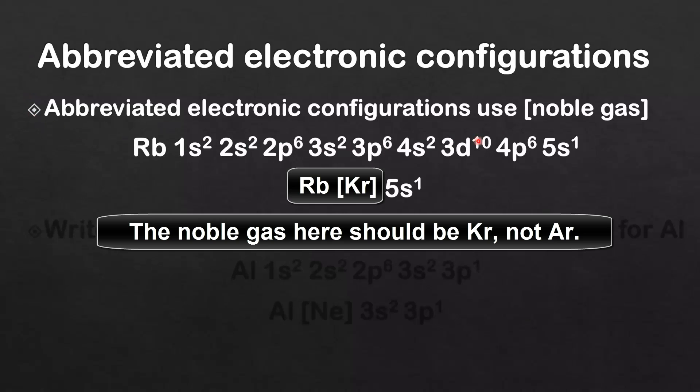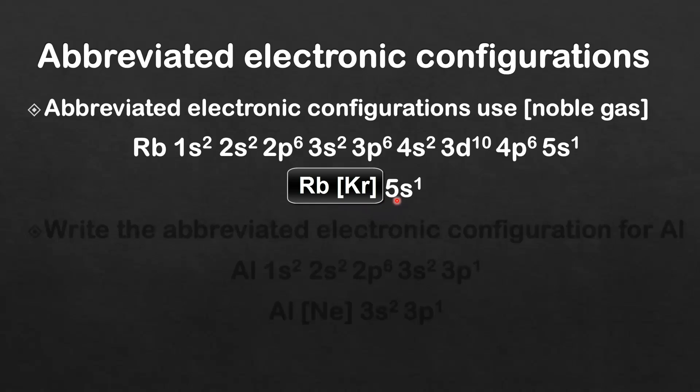Abbreviated electronic configurations use square brackets and then the symbol of a noble gas. So here's the electronic configuration of rubidium: 1s2, 2s2, 2p6, 3s2, 3p6, 4s2, 3d10, 4p6, 5s1. Now the abbreviated electronic configuration uses square brackets, then the symbol for argon, which is AR. And this represents the electronic configuration of argon, and then what's left over is 5s1.